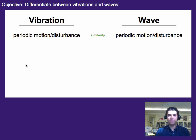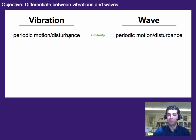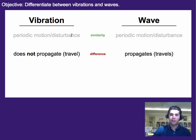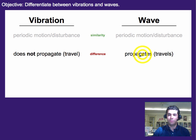To differentiate between these, here's a graphic showing where they're similar and where they're different. Vibrations and waves both share the similarity that they're periodic motions or disturbances — a movement back and forth. However, they differ in that a vibration does not travel or propagate — propagate is just a fancy word for travel — whereas a wave does propagate.